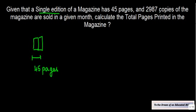And 2987 copies of the magazines are sold in a given month. So how many copies of these magazines are sold? 2987. Calculate the total pages printed in the magazine.